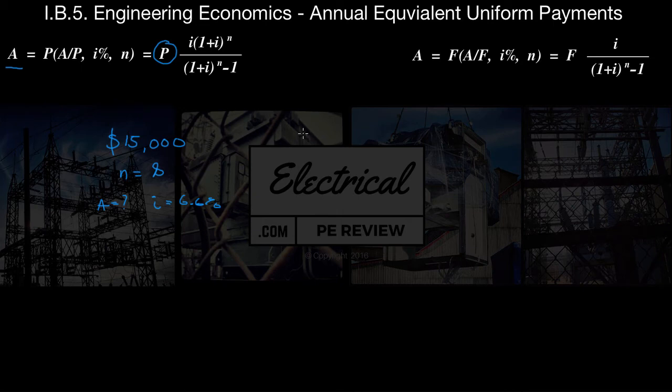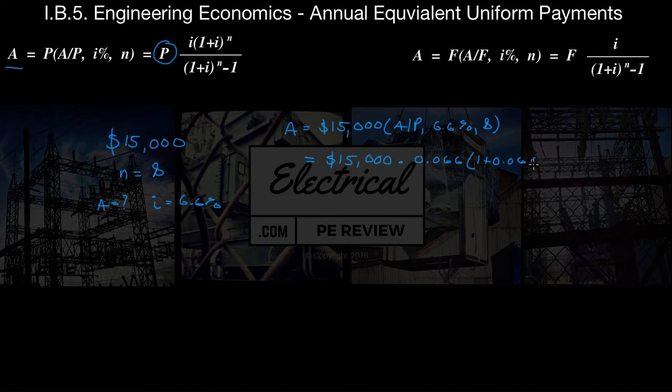And we want to know the annual equivalent A. So we can write this out as A equals our present value 15,000 times A given P for an interest rate of 6.6% for a period of eight. So this is going to equal 15,000 times our i in decimal form is going to be 0.066 times 1 plus i, 0.066, to an exponent of n equals 8, divided by 1 plus i, 0.066, to an exponent of 8 minus 1.